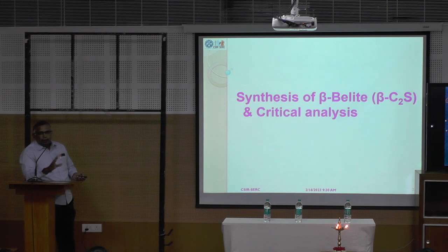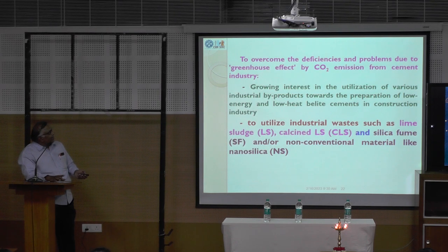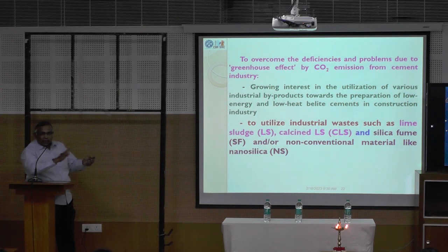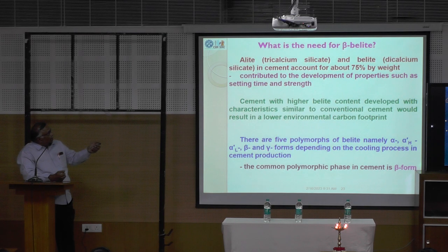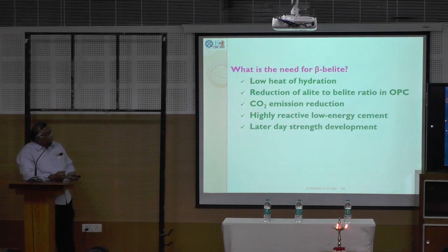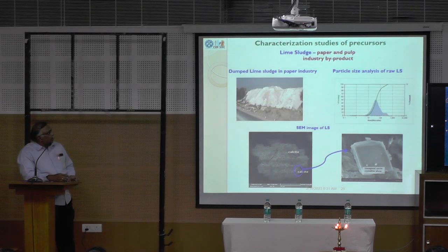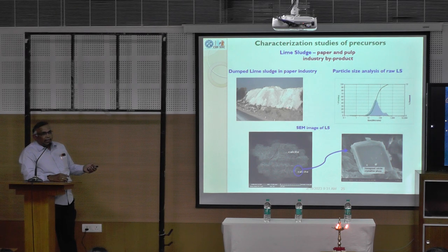Now I move on to material utilization — how I am getting new materials. Belite cement: I use two kinds of materials. One is industrial waste such as lime sludge, that is paper and pulp industry waste. I calcine it to high temperature and I am getting CLS. And then silica fume and nano — non-conventional material like nano silica. These three materials I have taken as my precursors, and I am trying to synthesize belite cement. It has low heat of hydration, reduction of alite C3S, CO2 reduction, high reactivity, low energy content, and later-day strength development. This is the lime sludge I received from the paper and pulp industry — it is dumped like this.